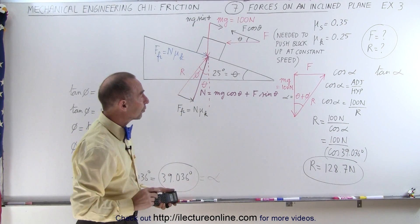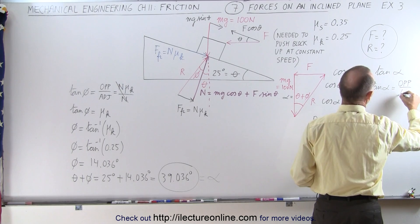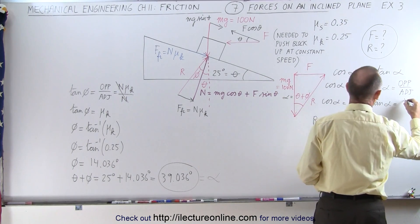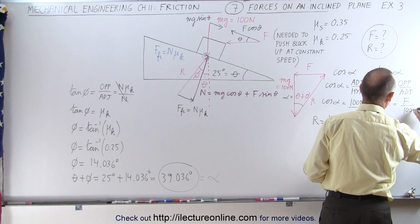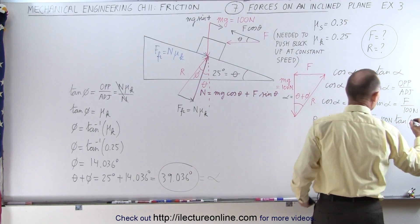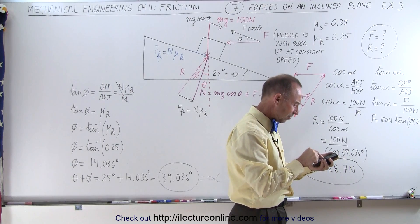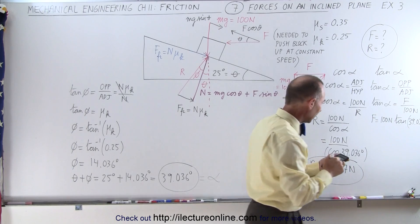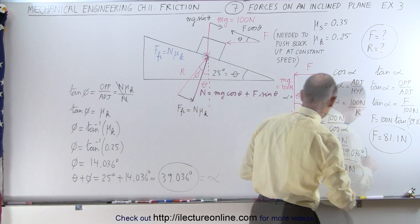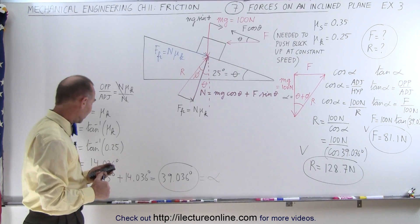Now we find the applied force F using the tangent. The tangent of alpha equals the opposite side divided by the adjacent side, so tangent of alpha equals F divided by 100 newtons. That means F equals 100 newtons times the tangent of 39.036 degrees. Taking the tangent and multiplying by 100, the applied force equals 81.1 newtons. So that gives us the reaction force and the applied force very quickly. Using this triangle technique, it just moves much faster.